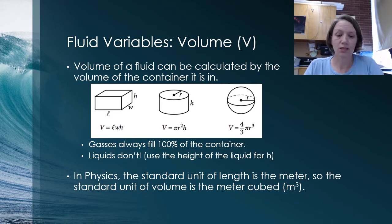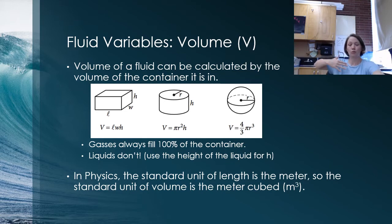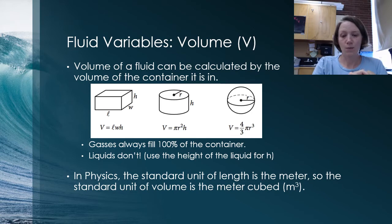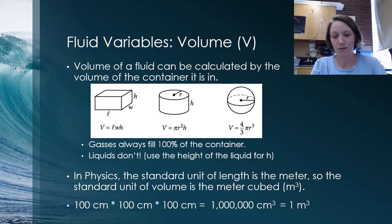In physics, this is something a little different from chemistry. The standard unit of length is the meter in physics, which means the standard unit of volume is actually a meter cubed. That's huge, right? In chemistry, you're dealing with milliliters or cubic centimeters. And in physics, all of our volumes to be in our SI units and to be compatible with the other units that we're used to need to be converted into meters cubed.